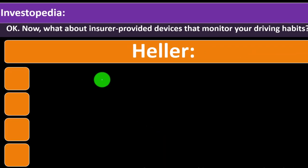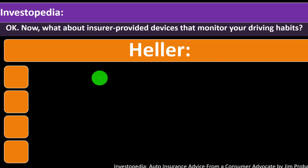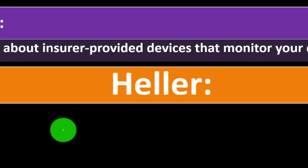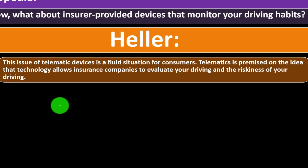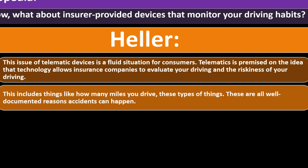Investopedia asking: what about insurer-provided devices that monitor your driving habits? Heller expert responding: the issue of telematic devices is a fluid situation for consumers. Telematics is premised on the idea that technology allows insurance companies to evaluate your driving and the riskiness of your driving. It's kind of interesting but also scary because now you've got an insurance company monitoring where you go. I can see why — if they could do that, they can see whether you're a safe driver, which could lead to lower insurance costs. I get the premise of it, but it's still a little disturbing.